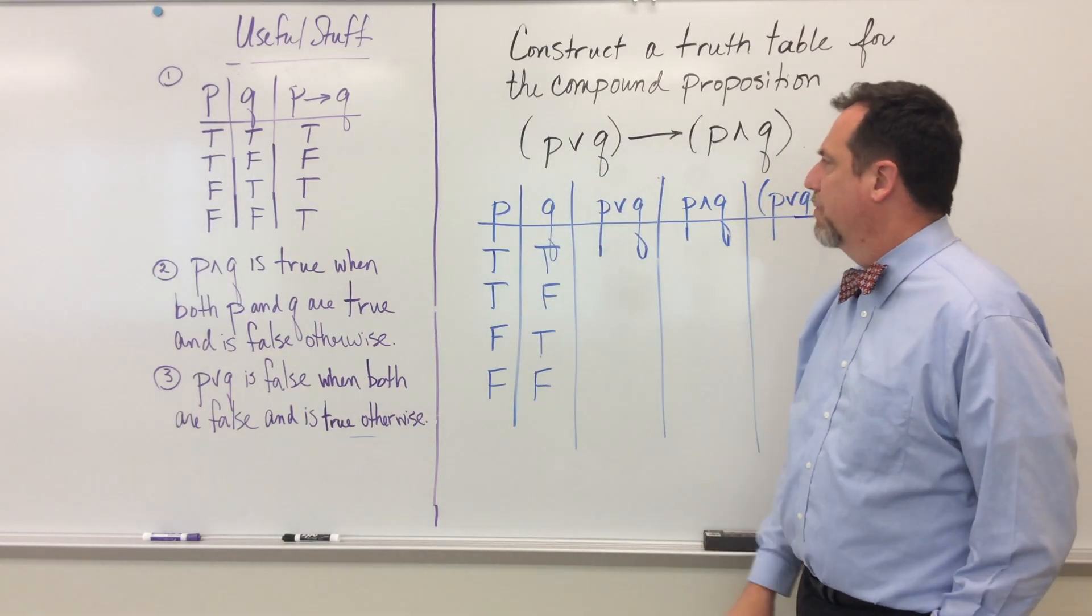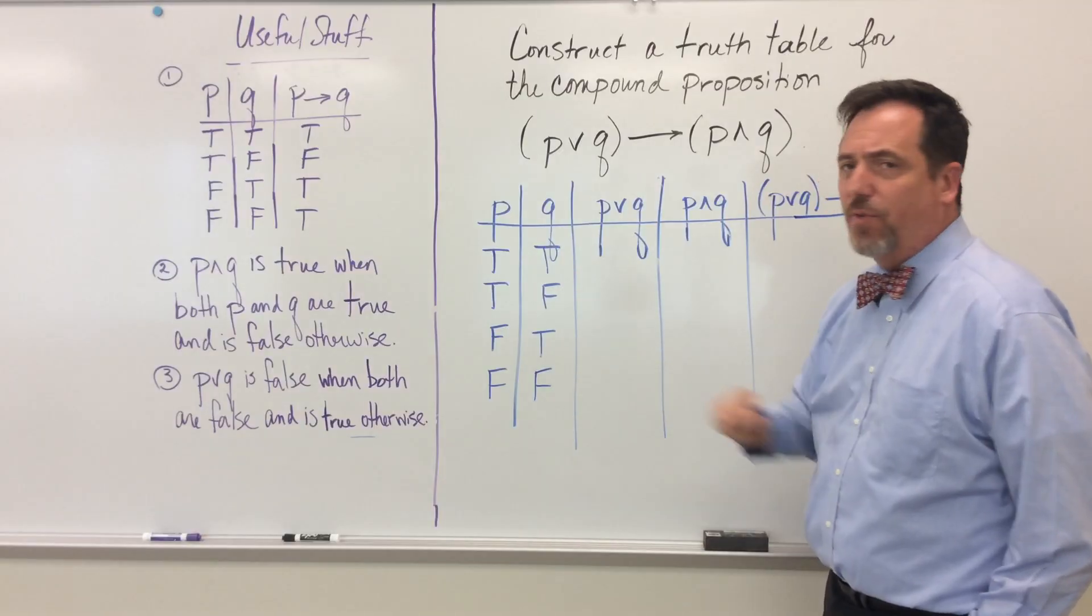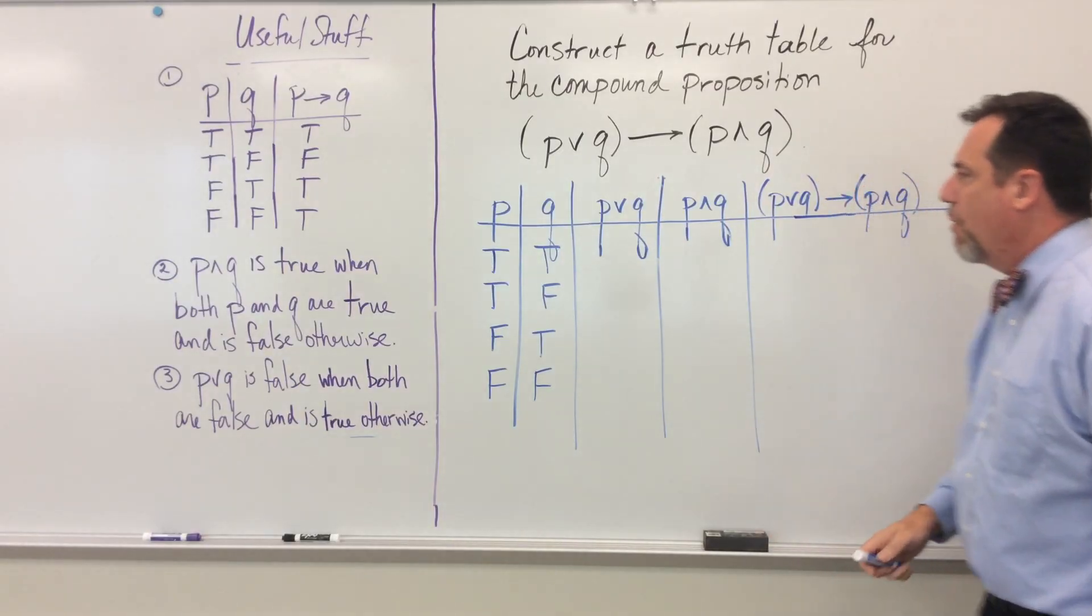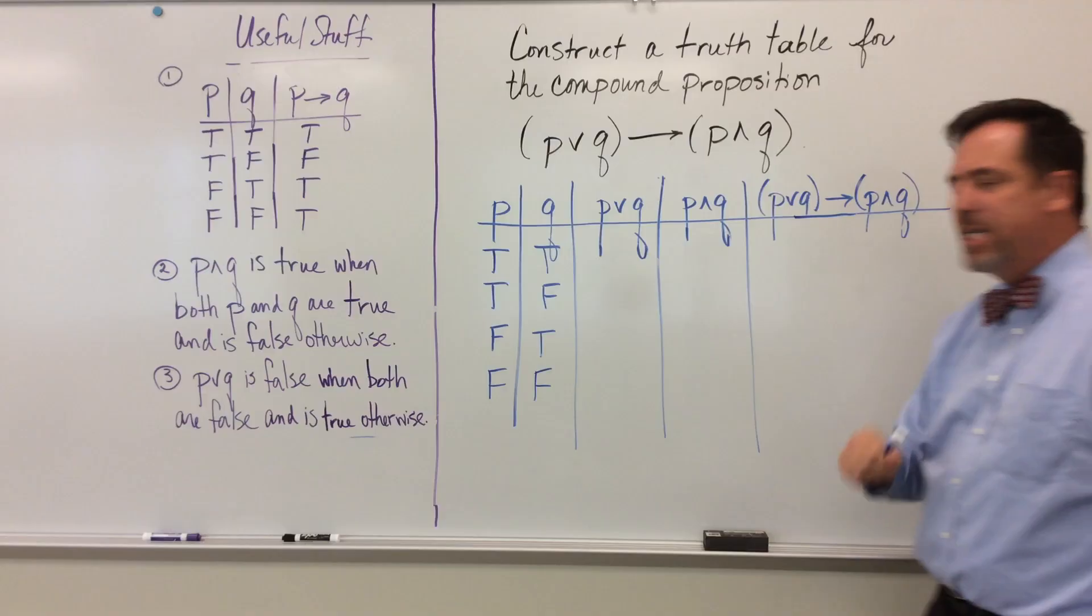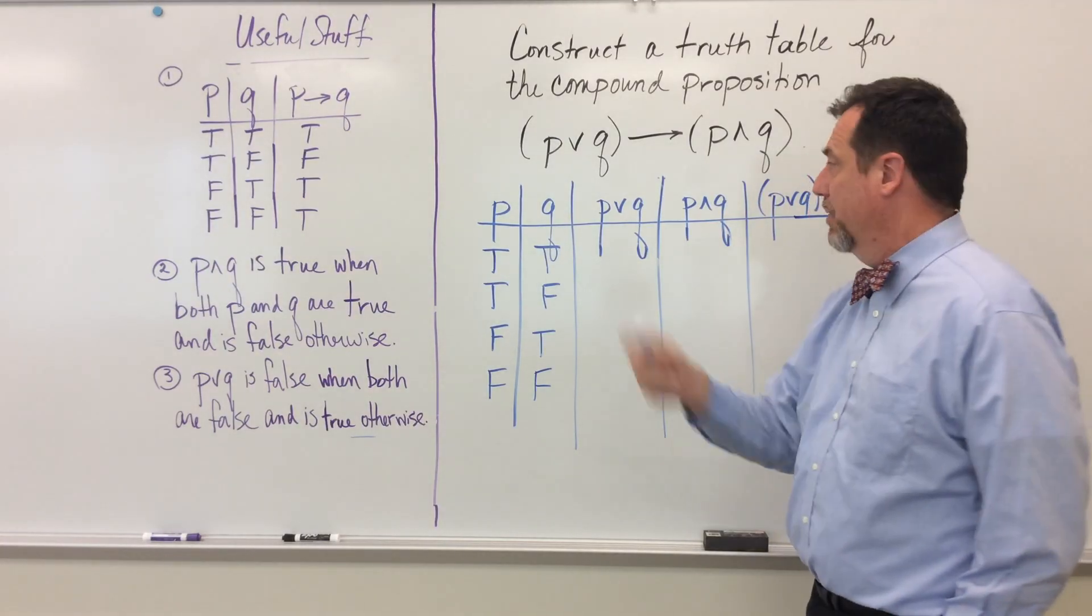So I did true, true, false, false for P and then true, false, and true, false for Q. And I have all four combinations, or rather permutations, of P and Q's truth values here.